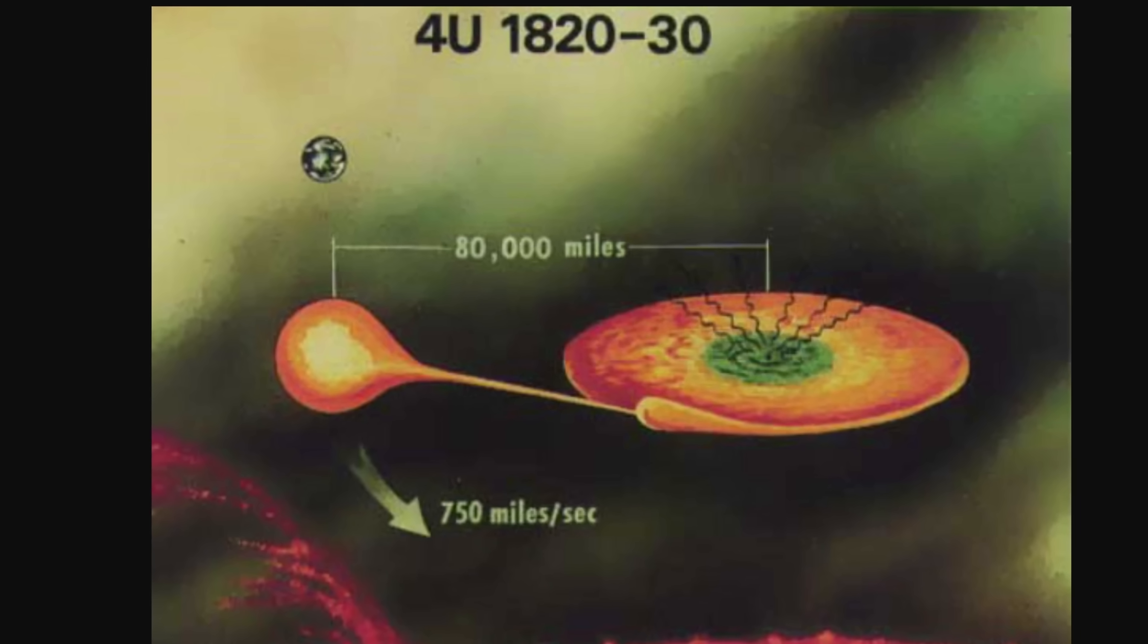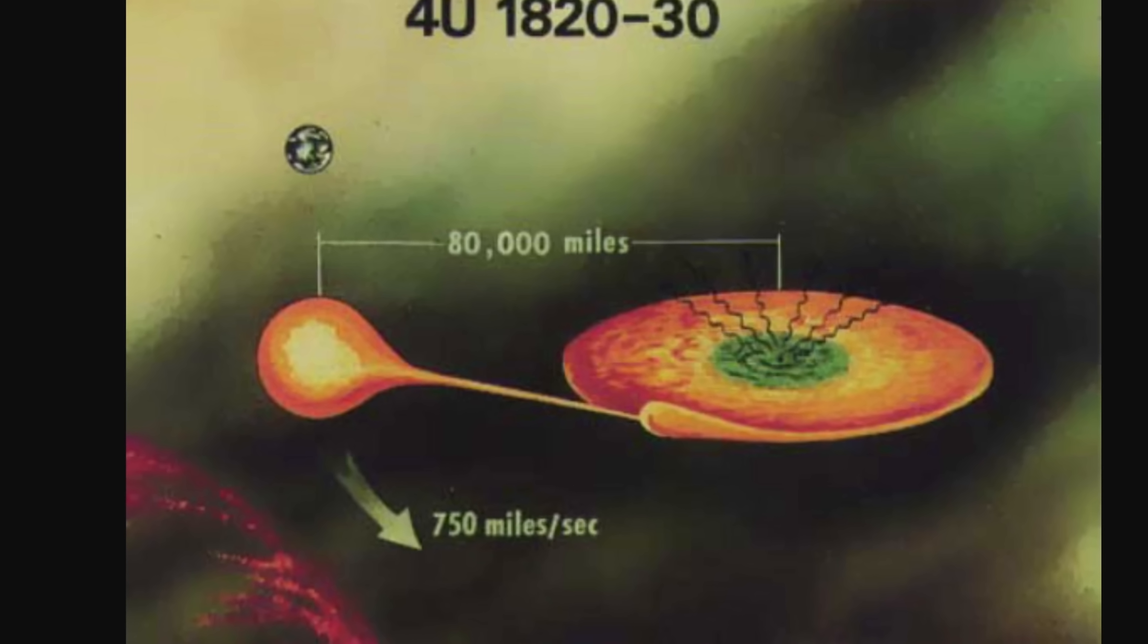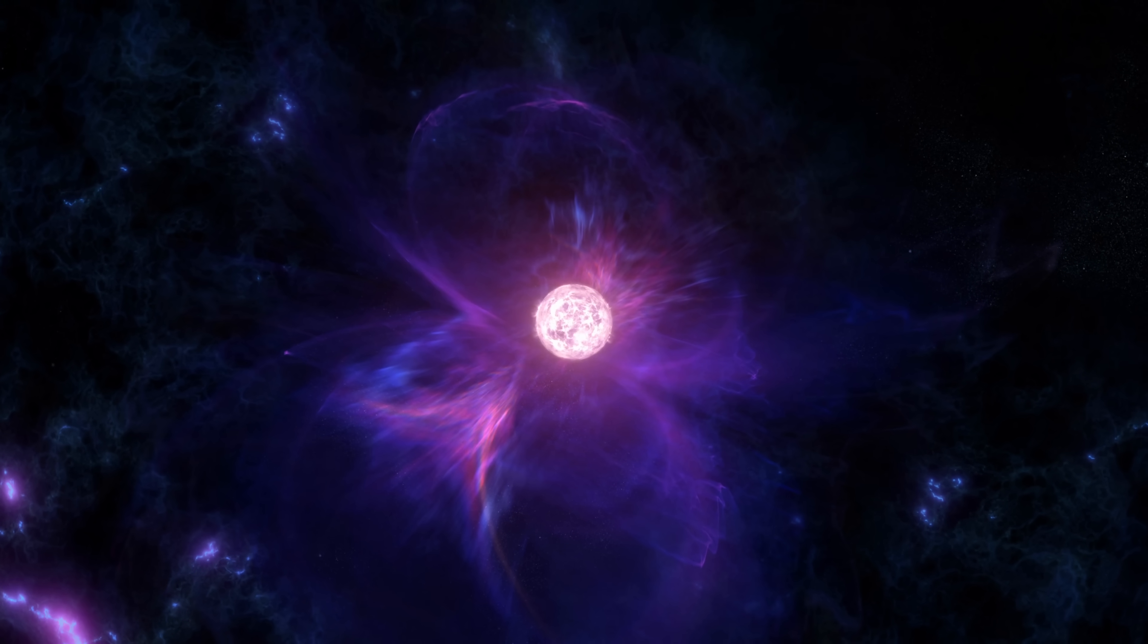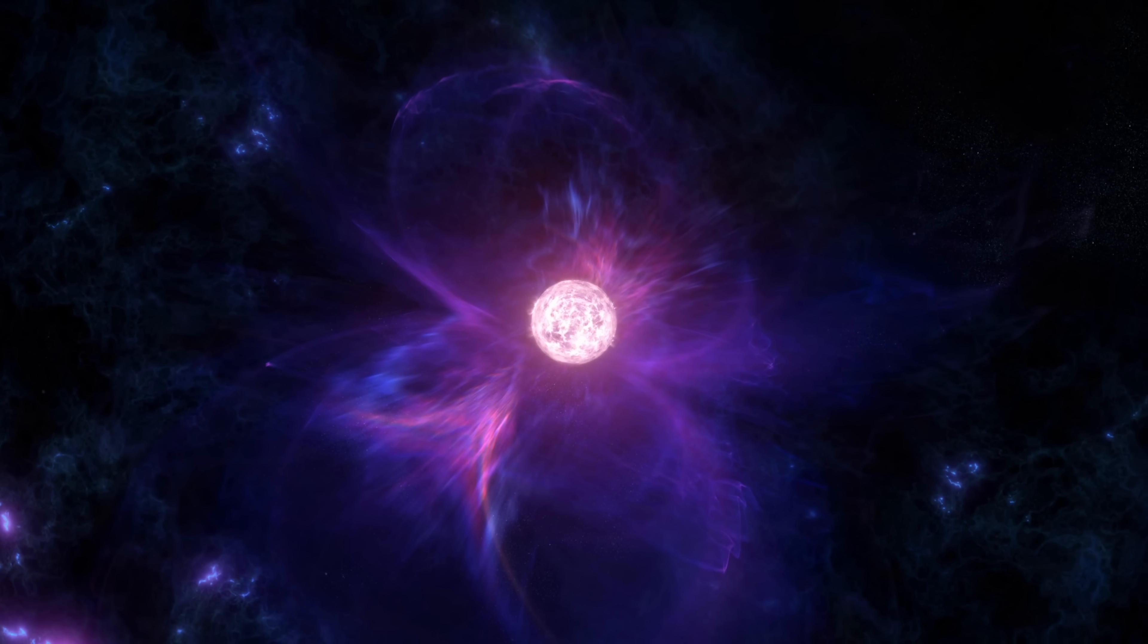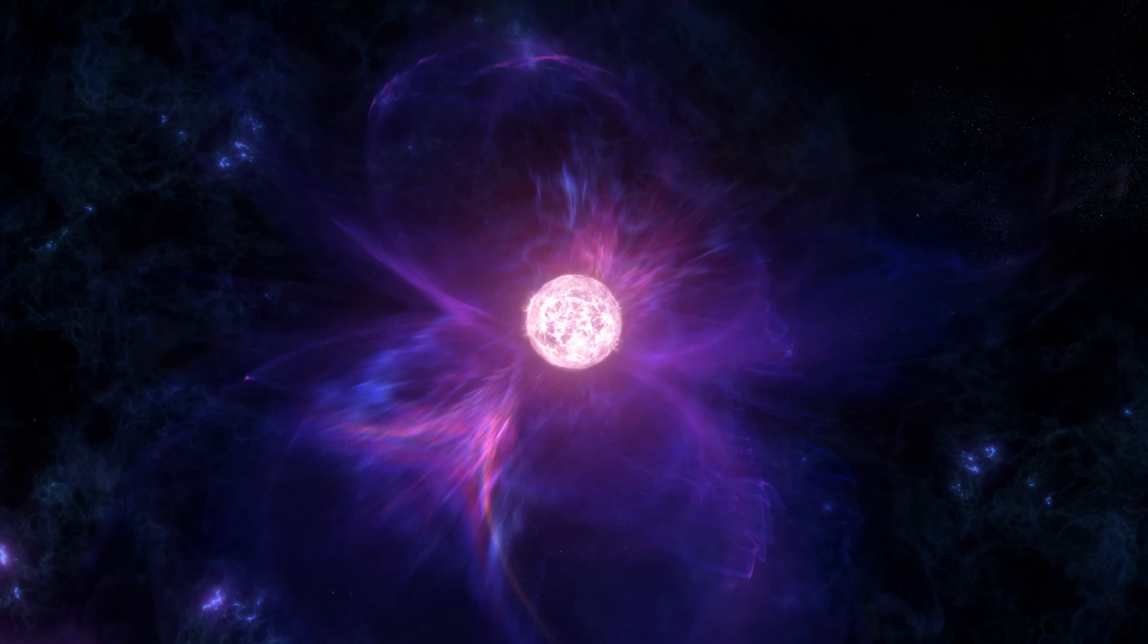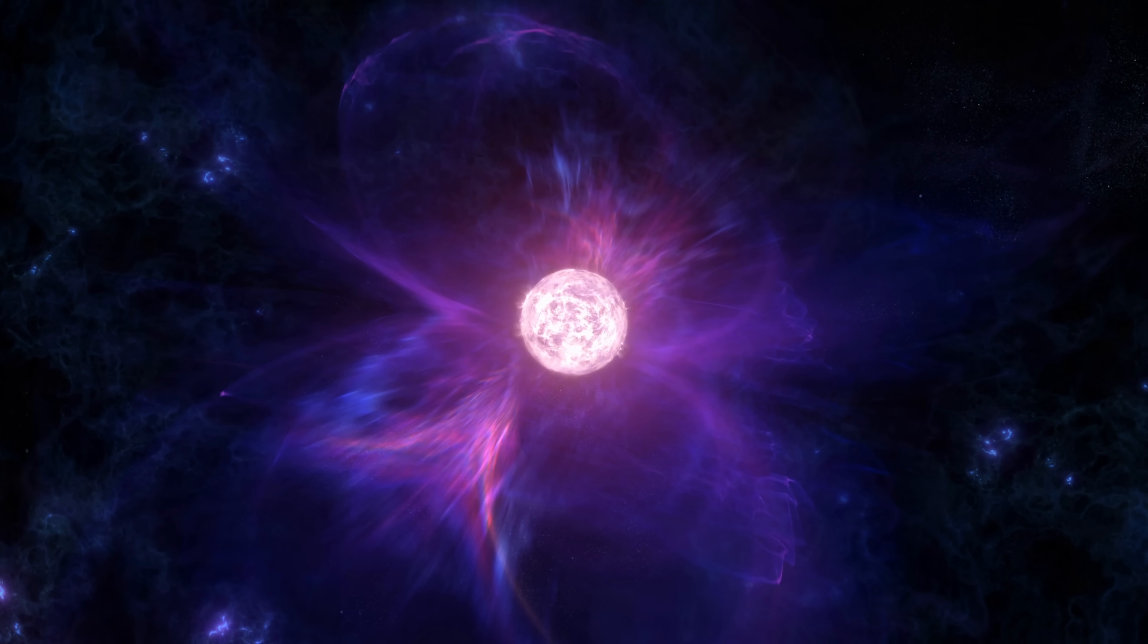And so once the white dwarf loses even more mass and possibly at some point turns into some kind of an almost like a planetary object, this system will potentially transition into something entirely different, with this white dwarf maybe even disappearing completely or maybe being consumed by the neutron star, producing the last powerful explosion.